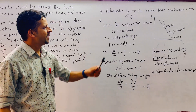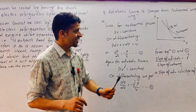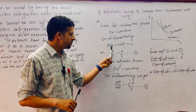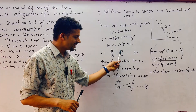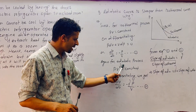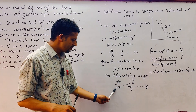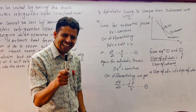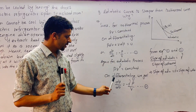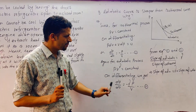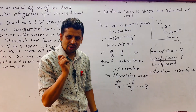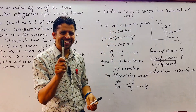Question 9: The adiabatic curve is steeper than the isothermal curve. For the isothermal process, PV = constant. On differentiating, PdV + VdP = 0, giving dP/dV = -P/V as the slope. For the adiabatic process, PV^γ = constant. On differentiating, dP/dV = -γP/V. Comparing both slopes, since γ > 1, the adiabatic slope is steeper. This is related to Laplace's correction to Newton's formula.